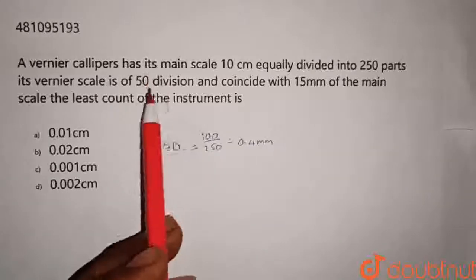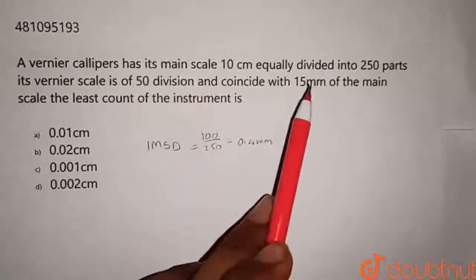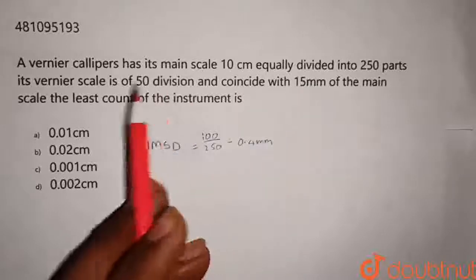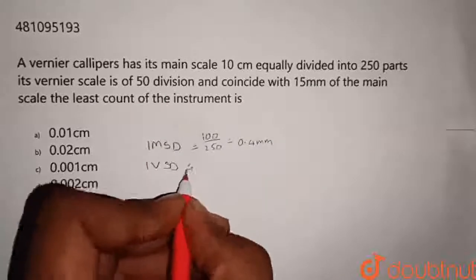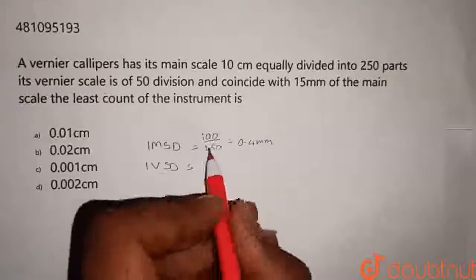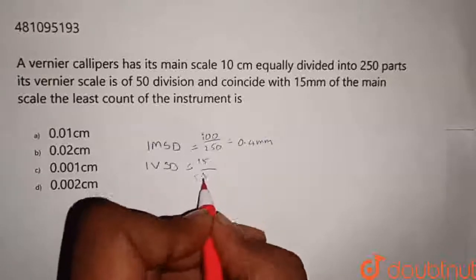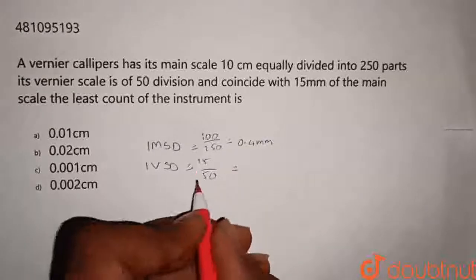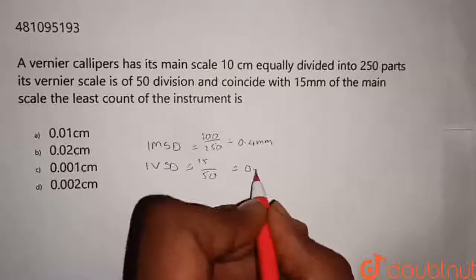And given 50 divisions of Vernier's scale is equal to 15 mm. Hence, 1 VSD is equal to length 15 by 50 divisions. 15 by 50 is 0.3 mm.